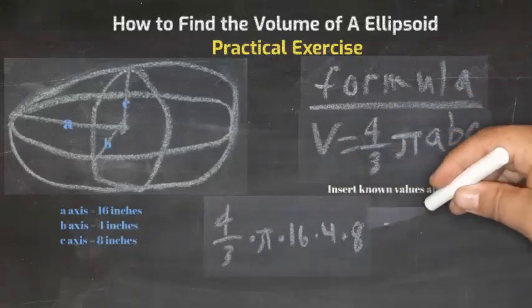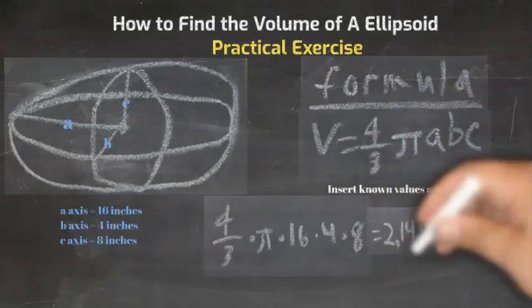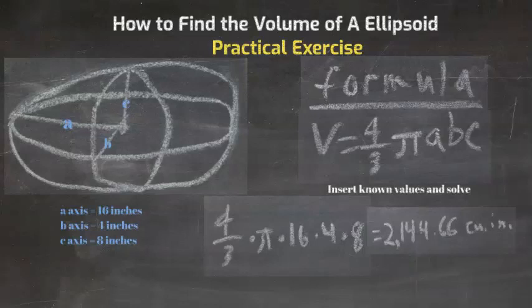After inserting our known values, the equation is four-thirds times pi times sixteen inches times four inches times eight inches. The total volume of this ellipsoid is 2144.66 cubic inches.